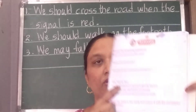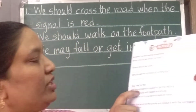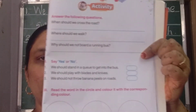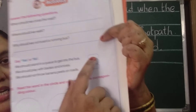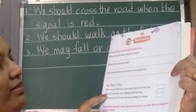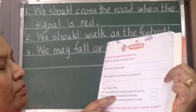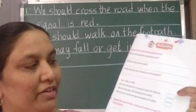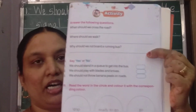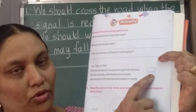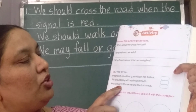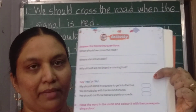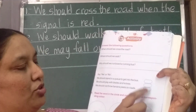Now say yes or no. We should stand in a queue to get into the bus — yes. We should play with blades and knives — no, we should not play with any sharp object. We should not throw banana peel on the road — yes, write yes in the box.